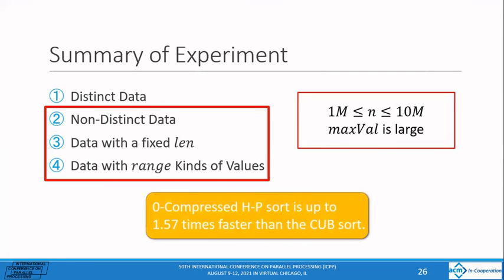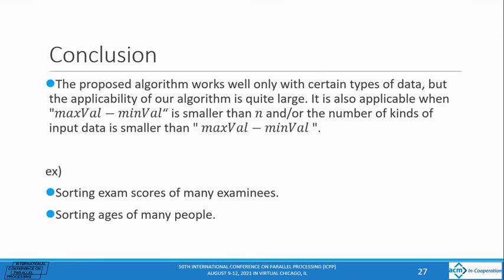When max val was large, the number of kinds of input data was small. Zero-compressed HP-sort was up to 1.57 times faster than cub-sort.